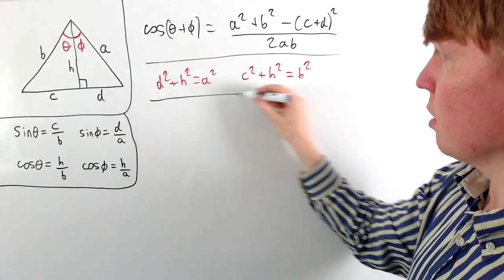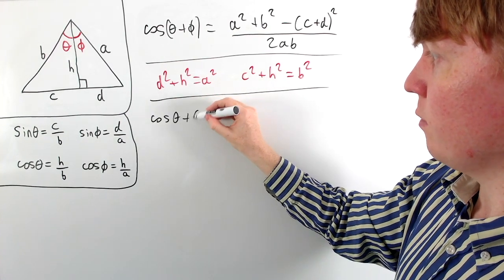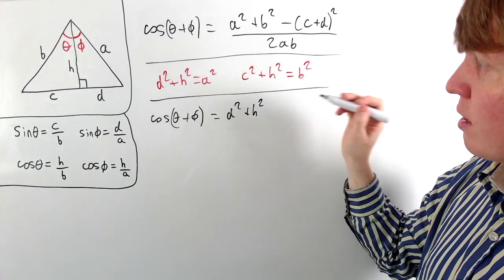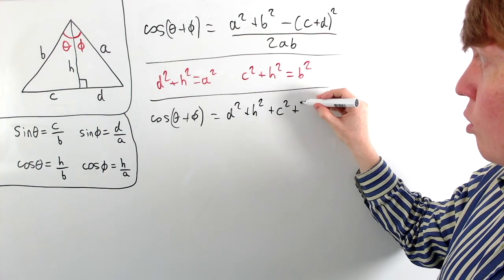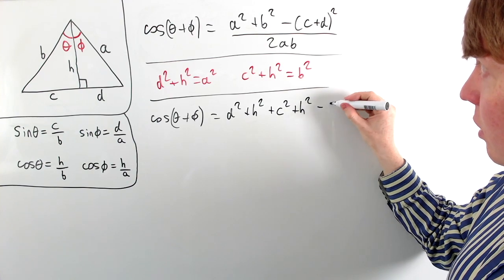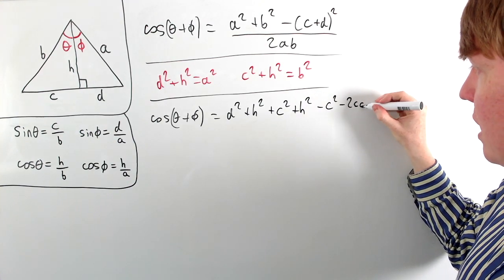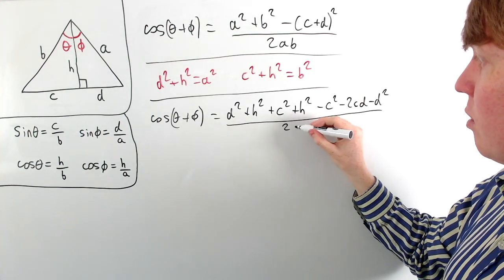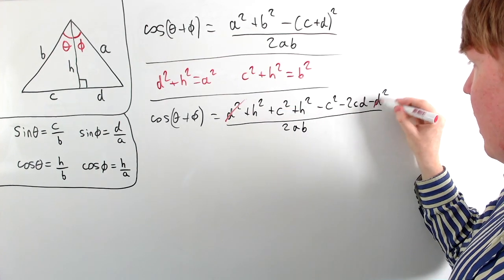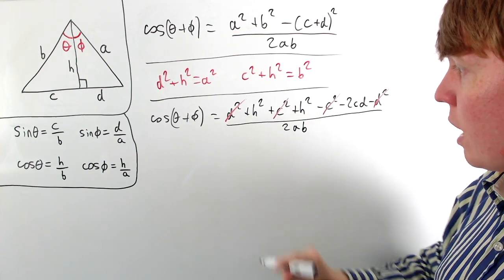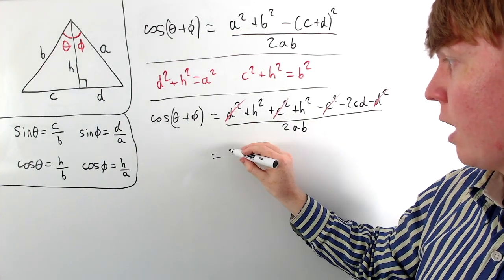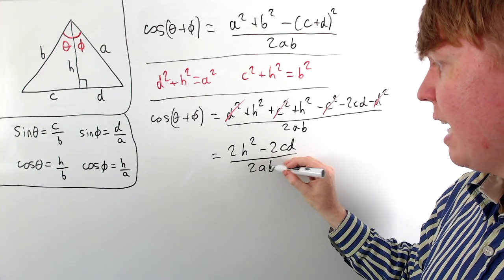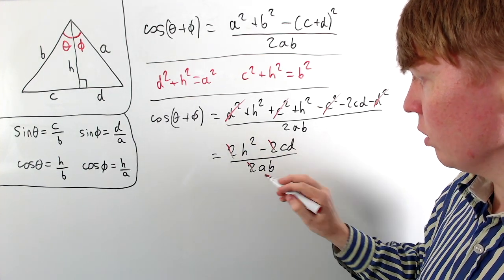We replace a² and b² using Pythagoras and expand the bracket. So cos(θ + φ) now has d² + h² replacing a², plus c² + h² replacing b², minus (c² + 2cd + d²) from expanding the bracket, all divided by 2ab. There's a lot of cancellation: d² cancels with −d², c² cancels with −c², and the two h² terms combine to give 2h², leaving us with 2h² − 2cd all divided by 2ab.